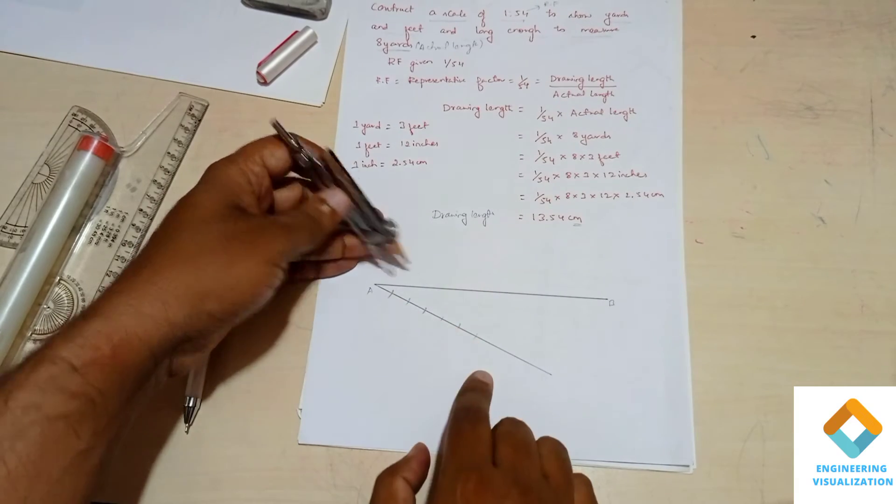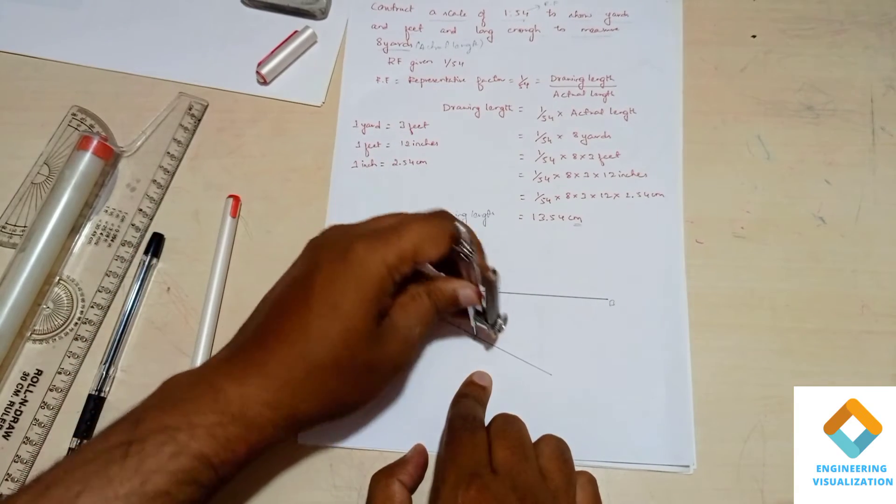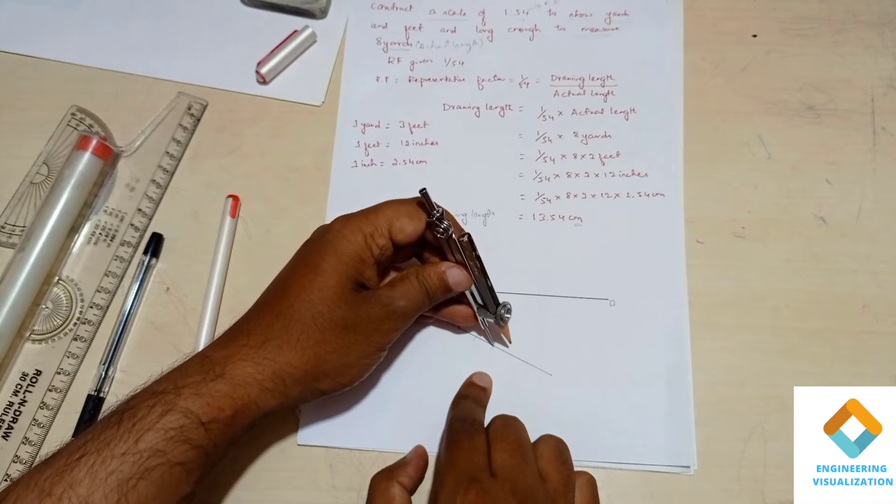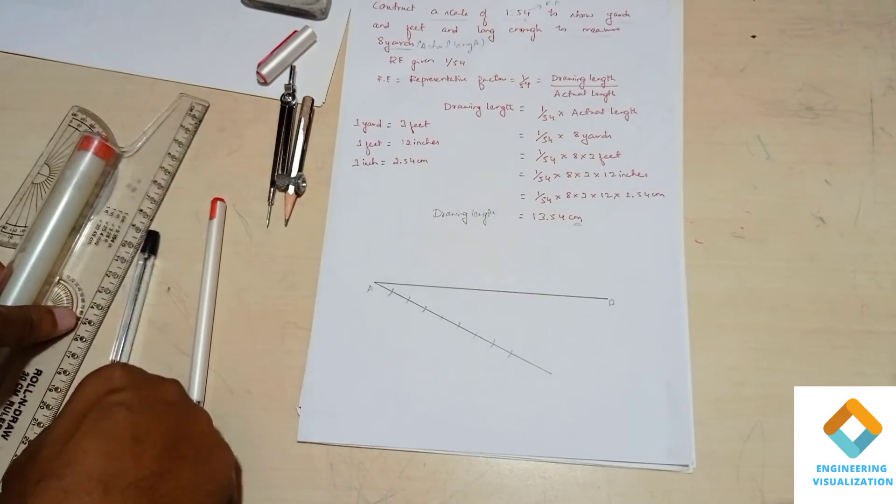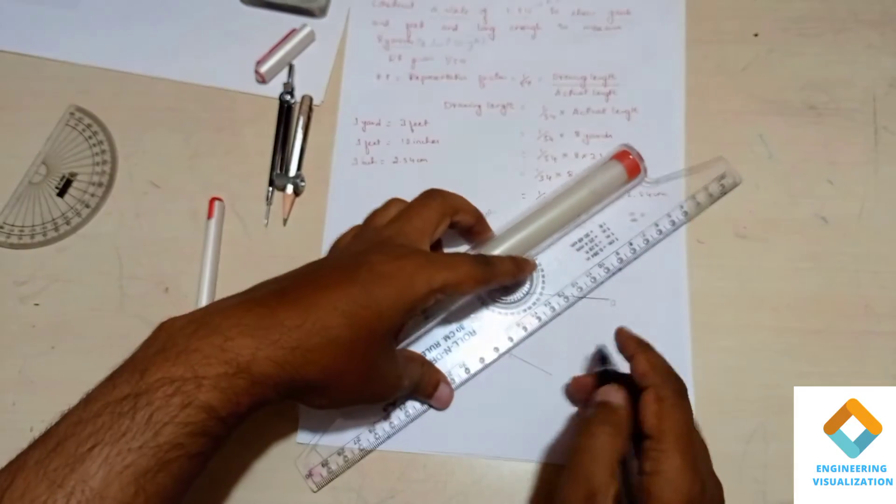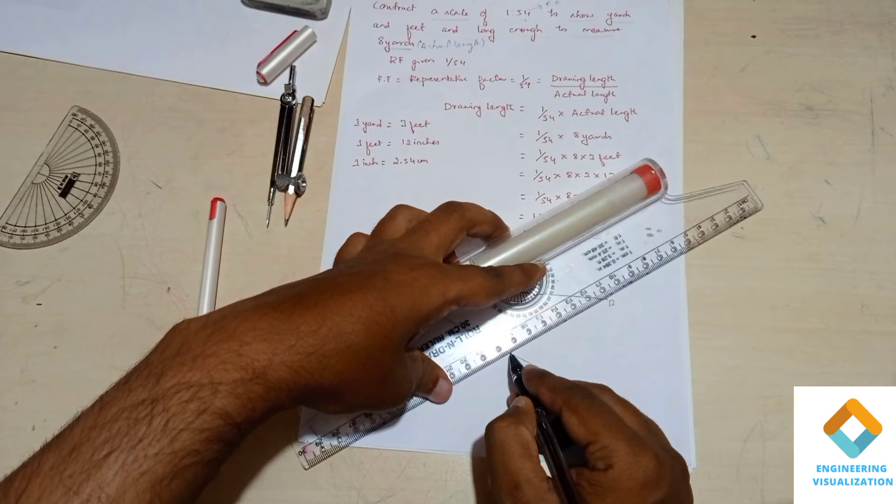You can count. Total 8 arcs you need to cut because we need to divide this line into 8 equal parts. After cutting it, the final arc point you join with the arc points with the B using scale.